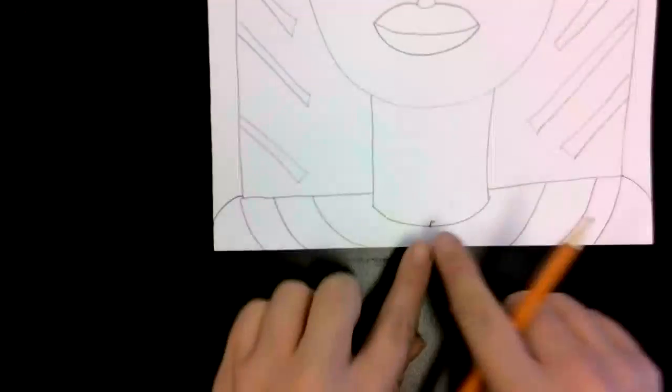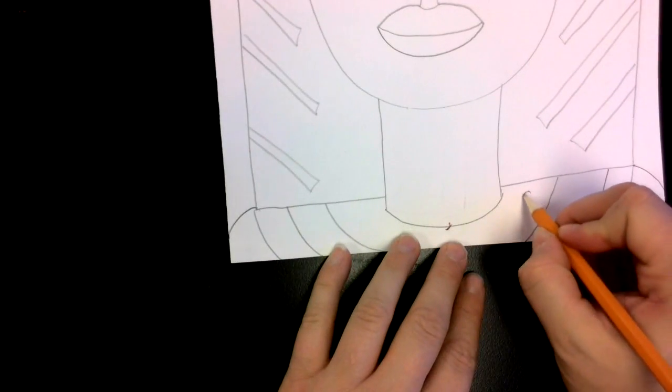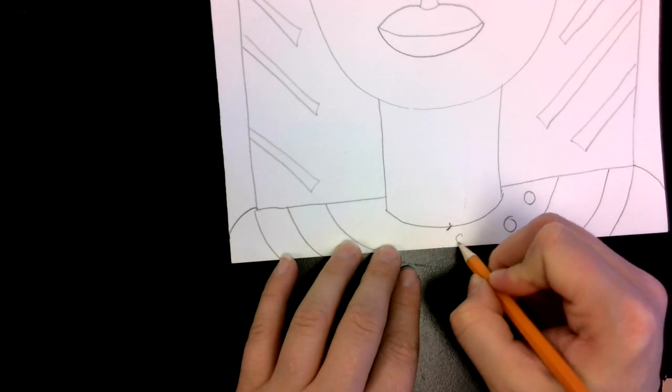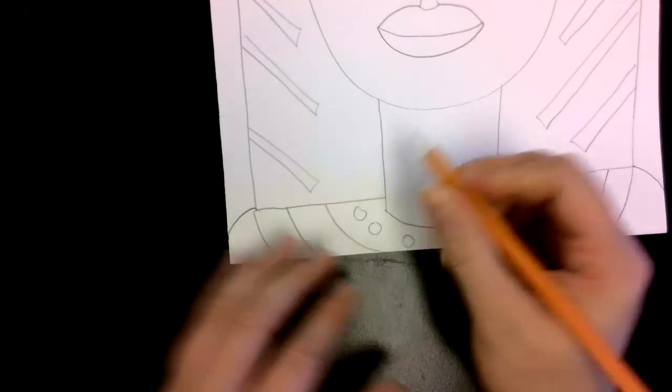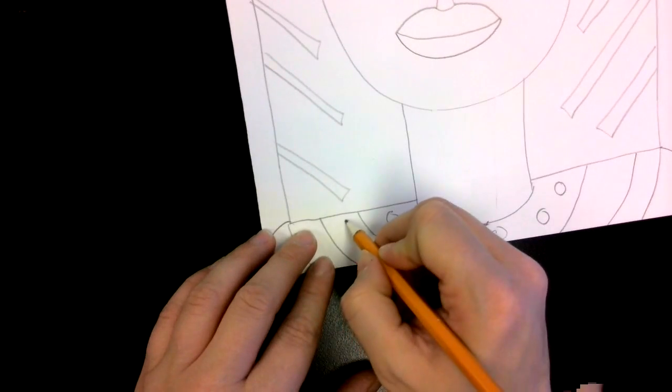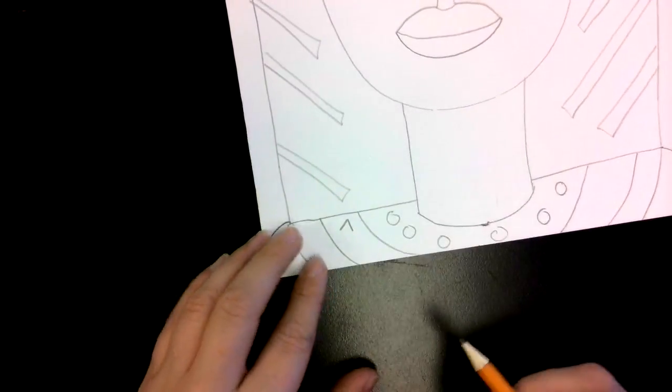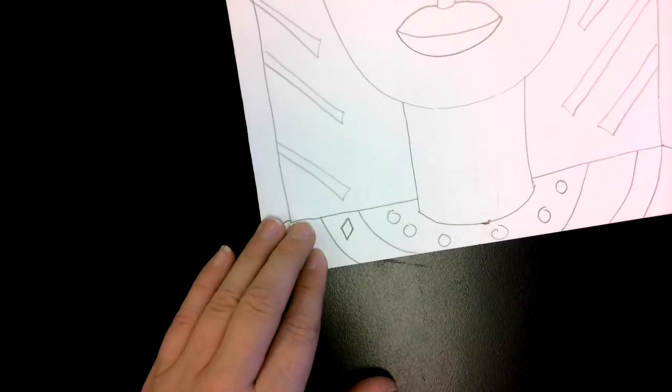I'm going to do the same thing with my jewels. I'm going to use shapes to make them look like jewels. I'm also going to draw a triangle and a triangle, and it makes a diamond.